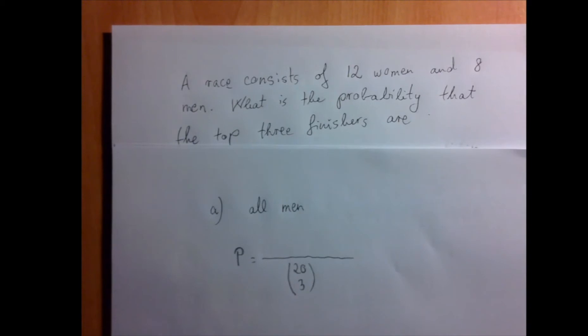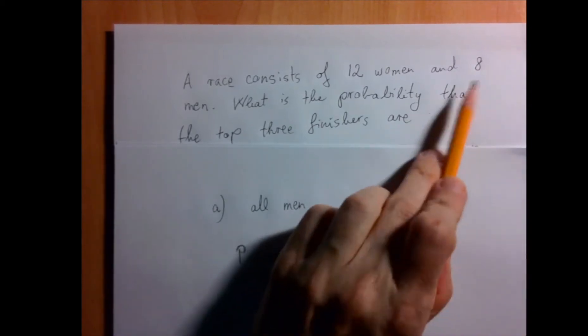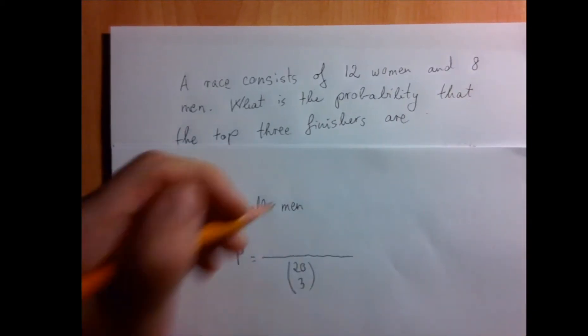And now the numerator would be the cases that we are interested in. How many different ways can we list all three finishers as being men? The answer is, if we want them all to be men, we have to select them from these eight. So that's 8 choose 3.